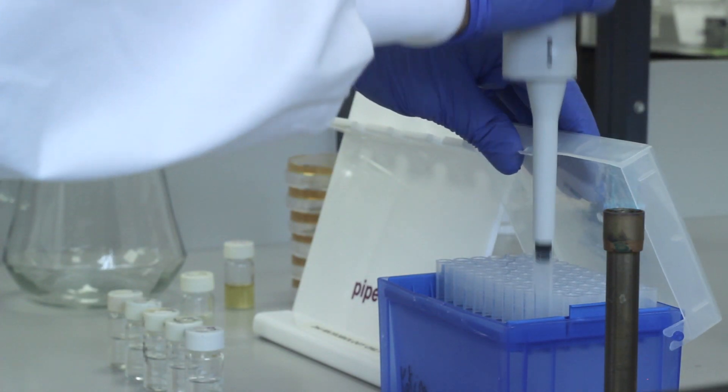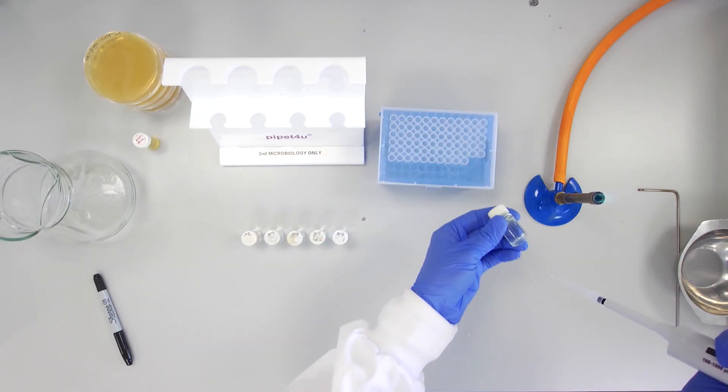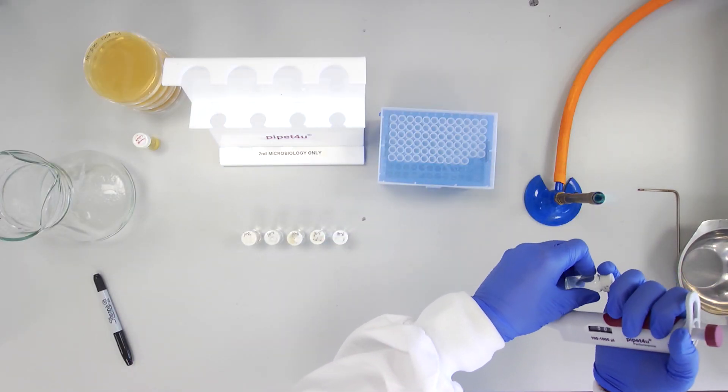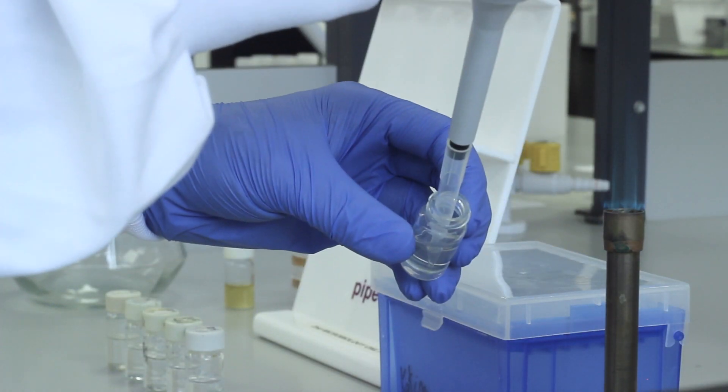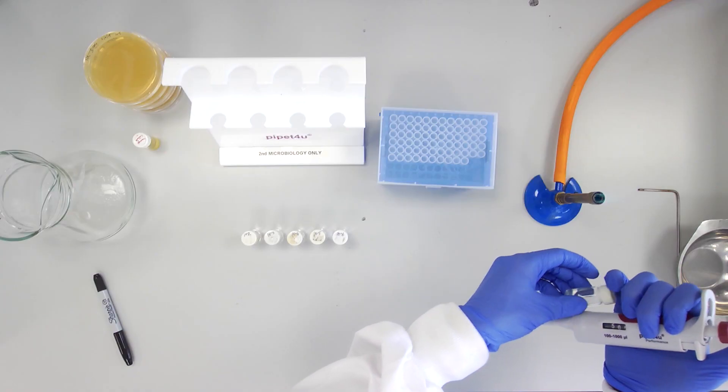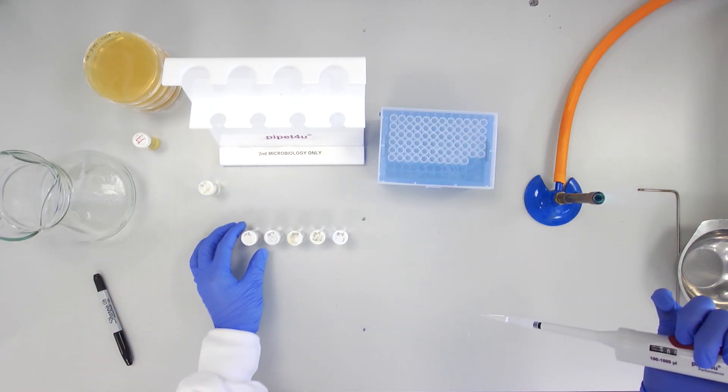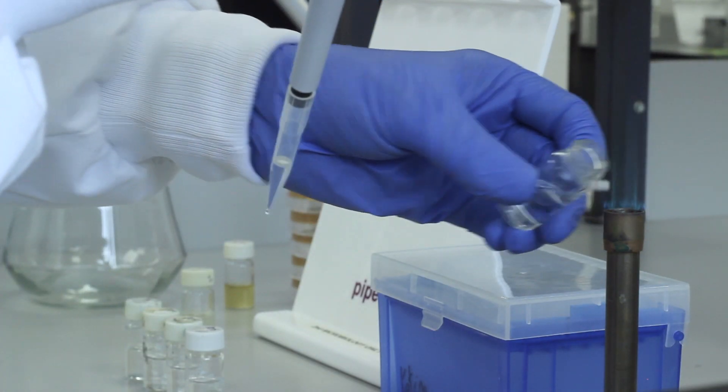Next, using a fresh tip, transfer 500 µl of the 10 to the minus 1 dilution into the next 4.5 ml saline. This prepares the 10 to the minus 2 dilution.